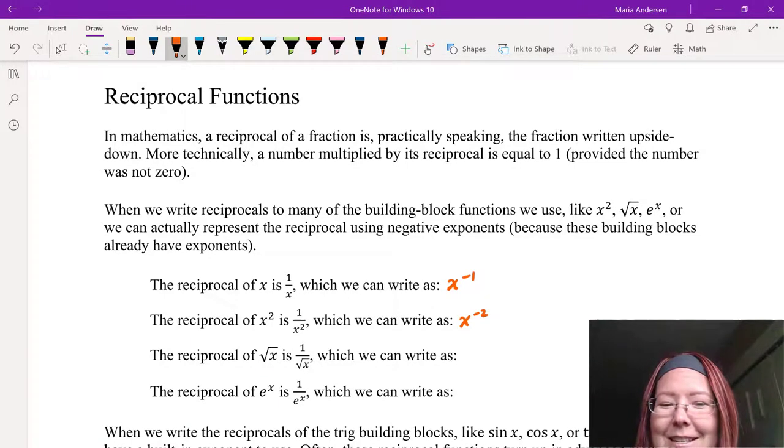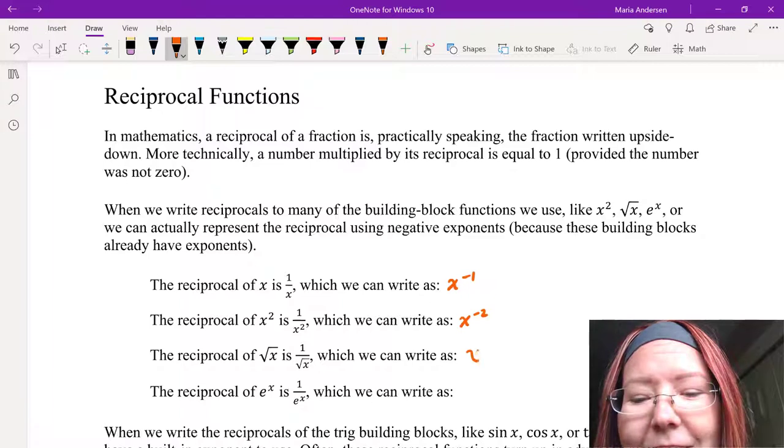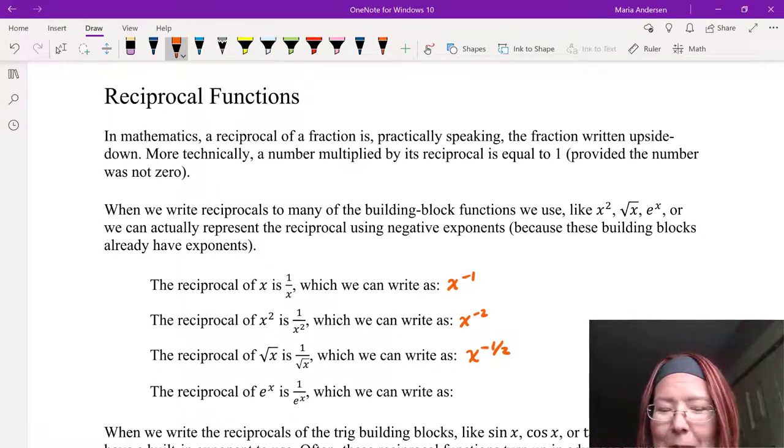The reciprocal of square root of x is 1 over the square root of x, and we can write that one as x to the negative one half, because a square root is a half power.